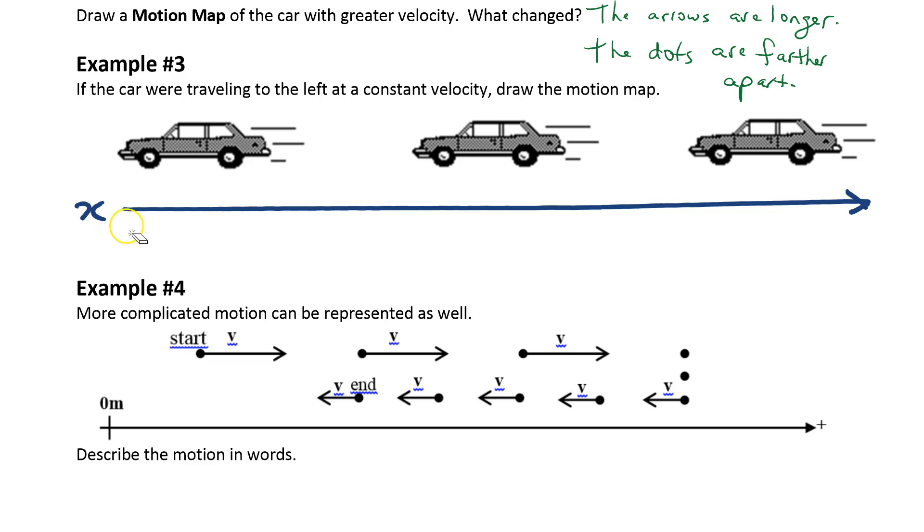So I have my motion map and this would be the origin, the zero spot going towards the positive. The car is first here and then here and then here. I'm going to draw the arrow halfway to the next dot but because it's going to the left my arrow goes to the left. It's at constant velocity so my last one should be about the same length. I can put a V by it to indicate that it is a velocity arrow.